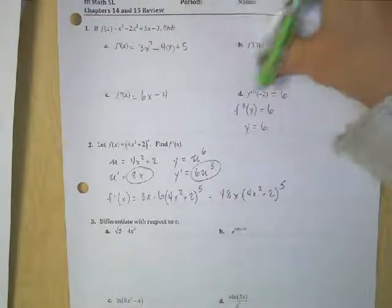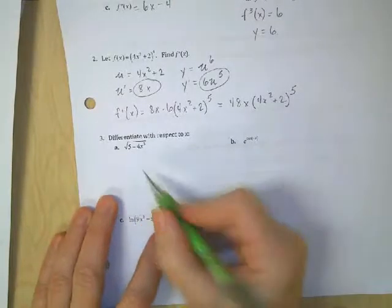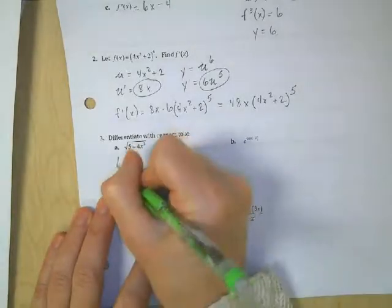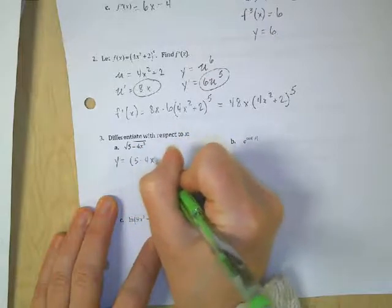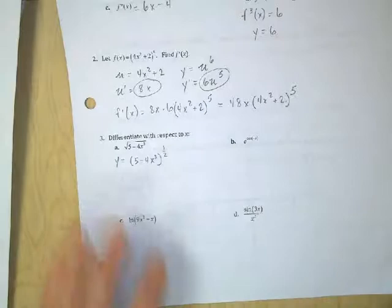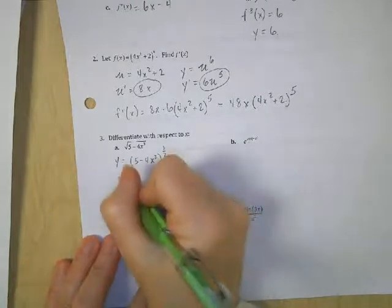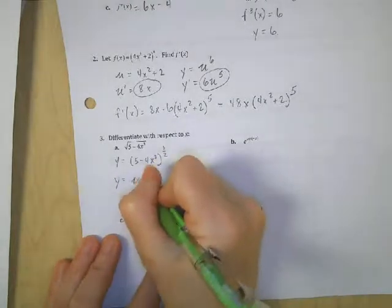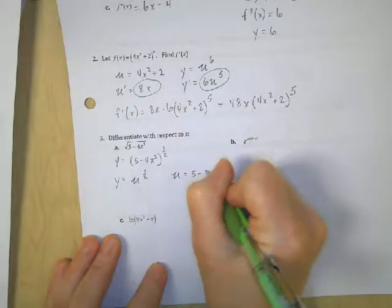Now, differentiate with respect to x. So, again, this is going to be chain rule. So I can write this as like y equals 5 minus 4x cubed to the 1 half. I want to rewrite any square roots with an exponent. So the exponent would be 1 half. So now if I rewrite this, I get y is equal to u to the 1 half. Now when u is equal to 5 minus 4x cubed,